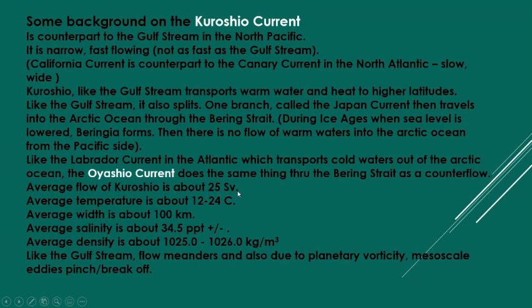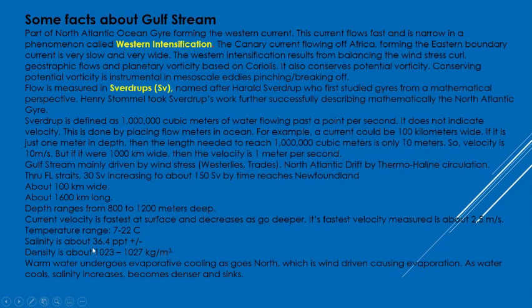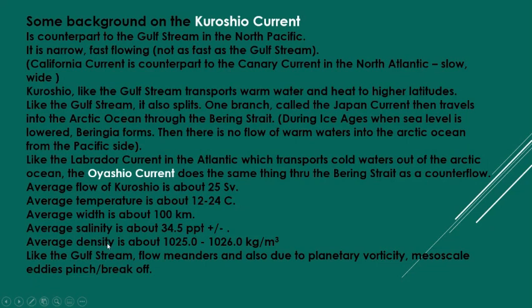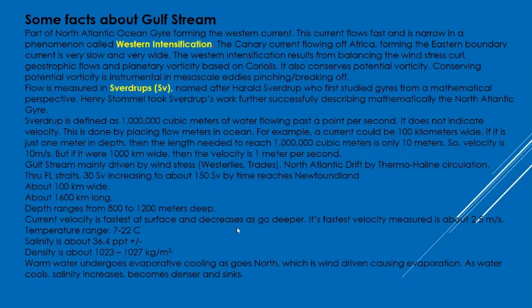The average flow of the Kuroshio is about 25 Sv — considerably less than the Gulf Stream. Average temperature is about 12 to 24°C, average width about 100 km. Average salinity is about 34.5 parts per thousand, compared to 36.4 for the Gulf Stream. That roughly one part per thousand difference makes a huge difference — subtle changes in salinity are enough to create density currents. Average density is about 1025–1026 kg/m³.